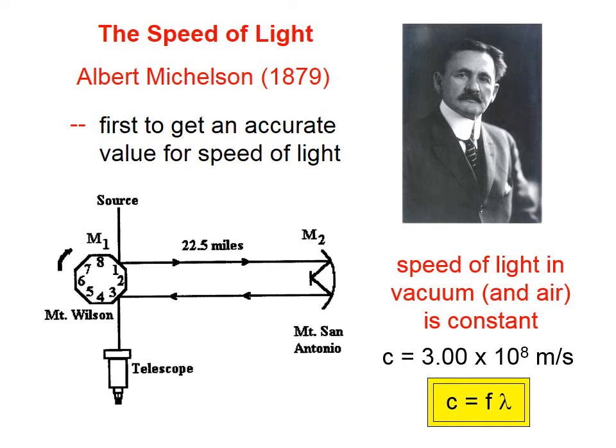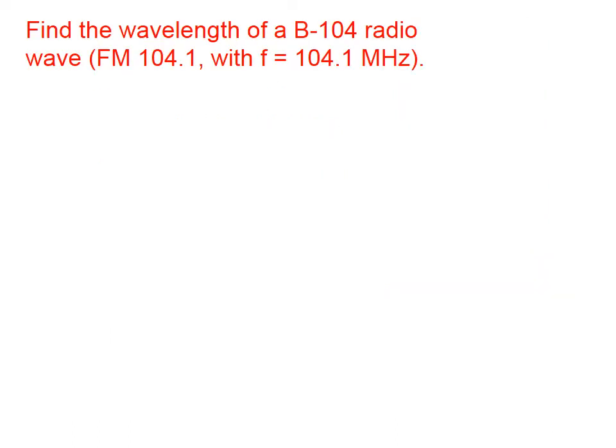The equation for relating the speed of light with the frequency and the wavelength of light is C equals F times lambda, where C is in meters per second, F, the frequency, is in hertz, and lambda, the wavelength, is in meters. Let's do an example problem.